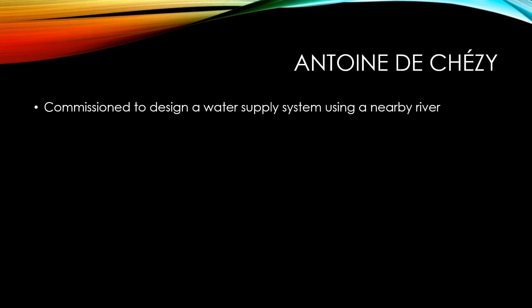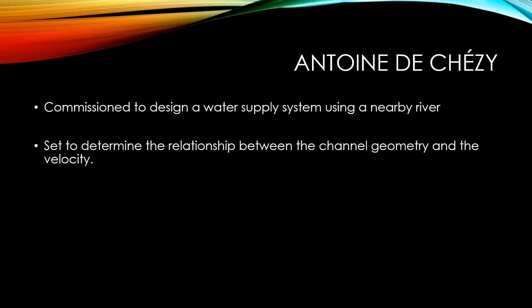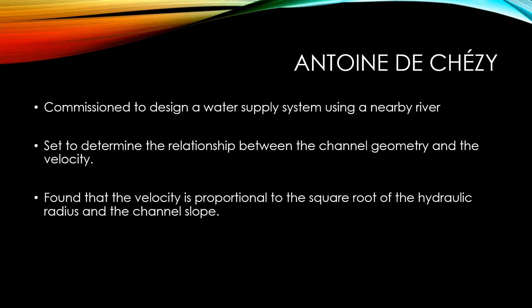Antoine de Chézy was a French hydraulic engineer who was commissioned to design a water supply system using a nearby river, the Yvette River. He was said to determine the relationship between the channel geometry and the river velocity. However, there was no literature at the time that gave this relationship, so he made his own analysis.